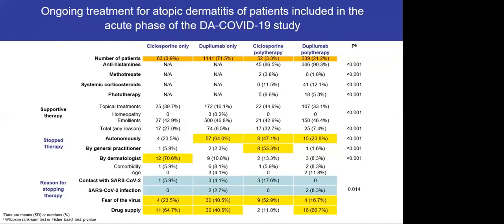Among patients who stopped therapy, many did so autonomously, especially those treated with dupilumab. In patients treated with cyclosporine, either alone or in polytherapy, treatment was stopped by the general practitioner or by the dermatologist. The main reasons for stopping therapy were difficulties in drug supply — for both cyclosporine and dupilumab — or fear of the virus. Very few patients stopped treatment because of a concomitant virus infection or contact with infected patients.